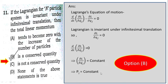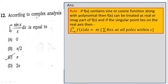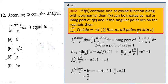Question number 12: according to complex analysis, we have to find the integral from 0 to infinity of sin(x)/x. The rule is that if f(x) contains sin(x) or cos(x), you write f(x) as the real or imaginary part of e^(iz). The formula is: the integral from −∞ to ∞ of f(z) dz equals πi times the sum of residues at all poles within the contour.